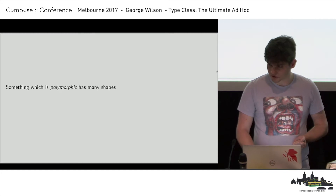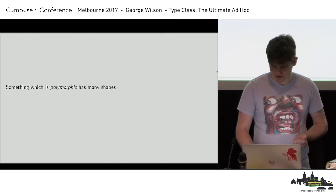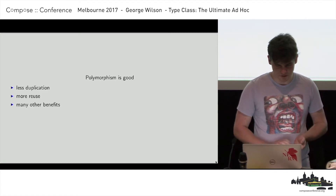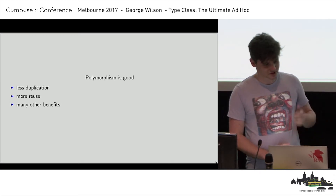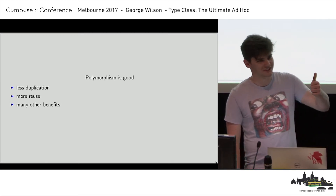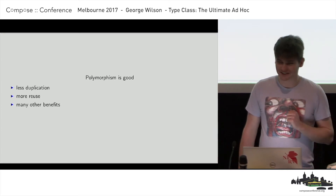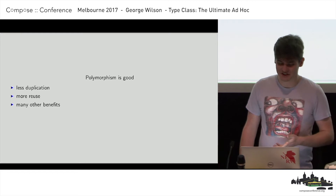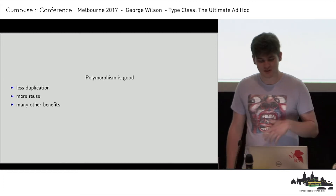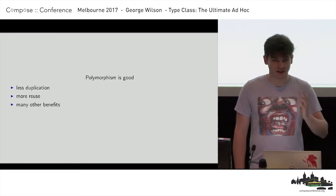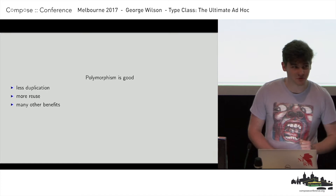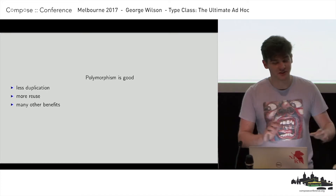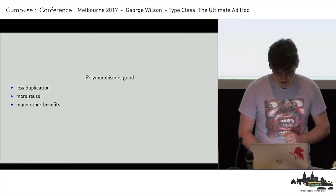There are a few different forms of polymorphism that we'll see. Polymorphism is good — it'll lead to less duplication in our code, more reuse, and many other benefits. I hope you agree that polymorphism is good because I don't have much time to justify it.